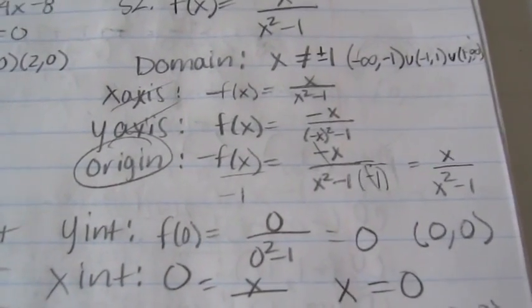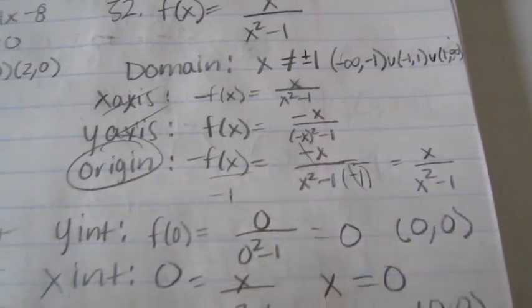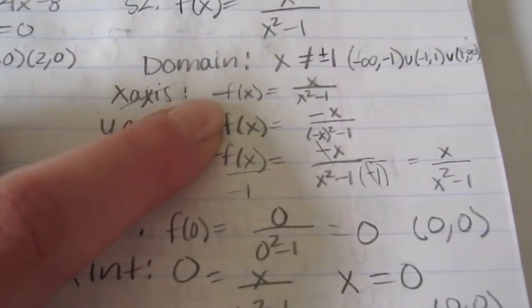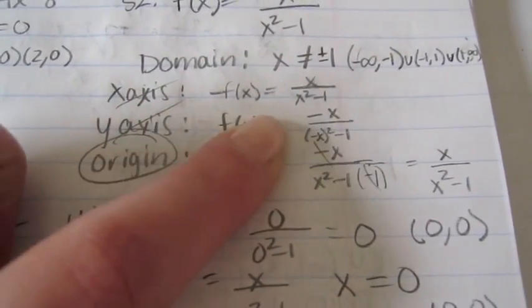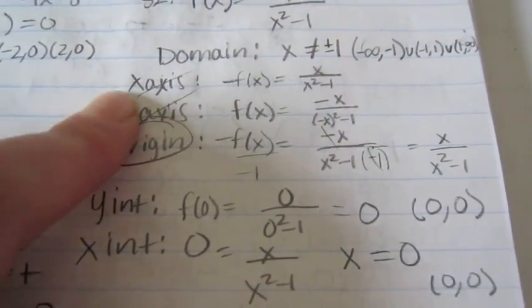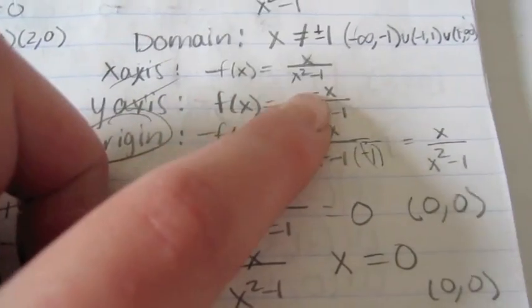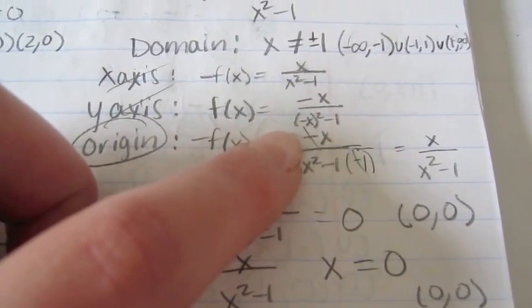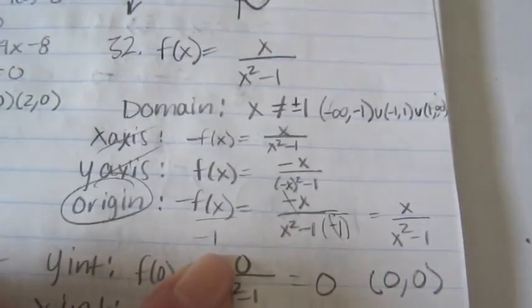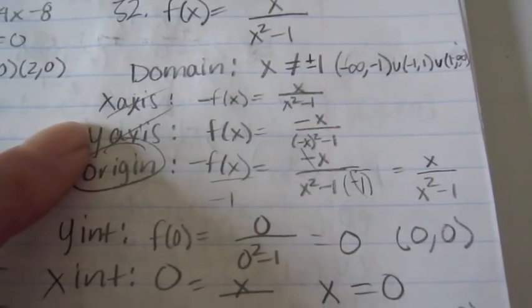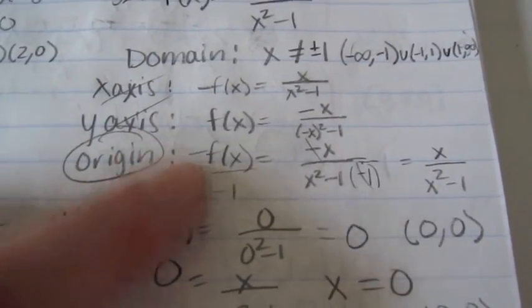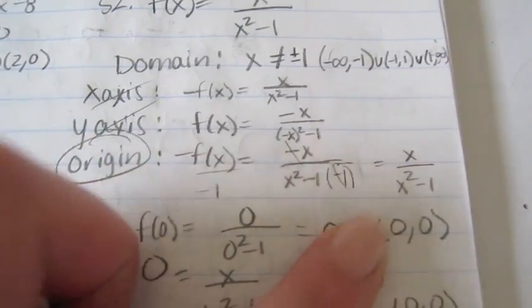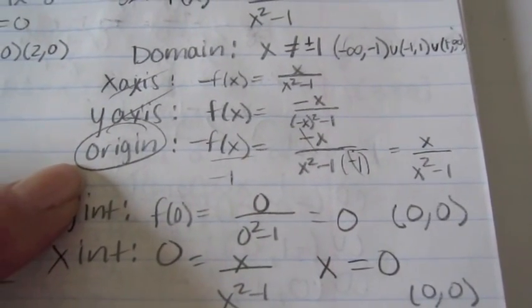For x-axis symmetry, you set f(x) to negative — that changes the function, so it's not possible. For y-axis symmetry, you set x to negative — that also changes the function, so that's not possible either. For origin symmetry, you set both f(x) and x to negative, and it brings you back to the original function, so this has origin symmetry.